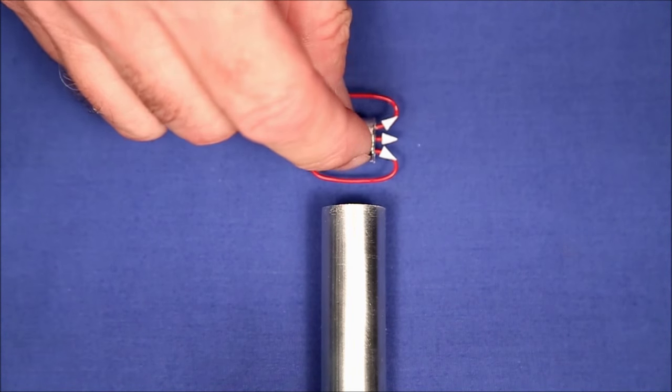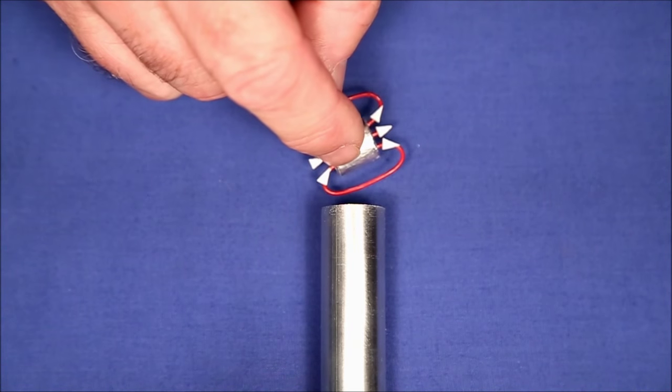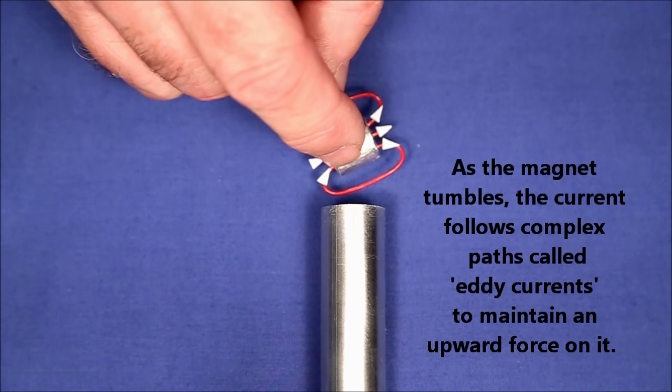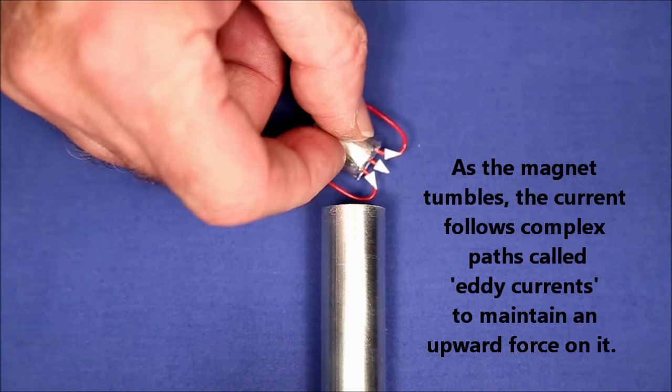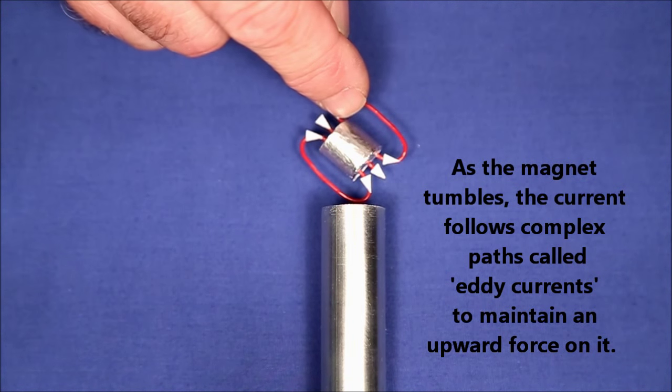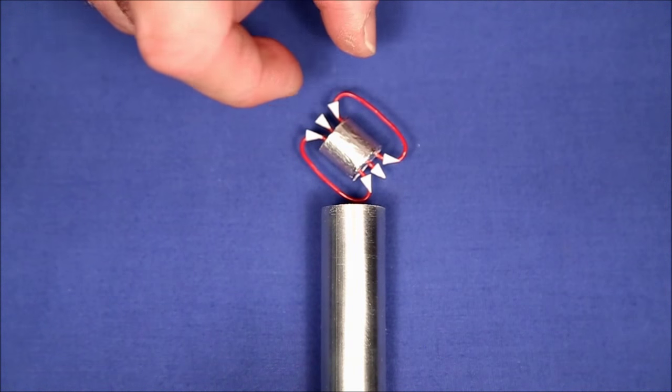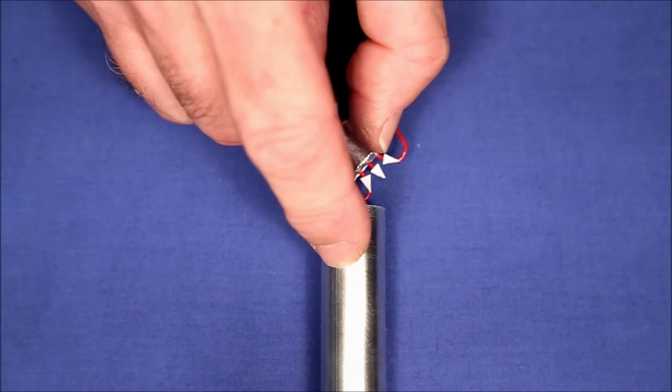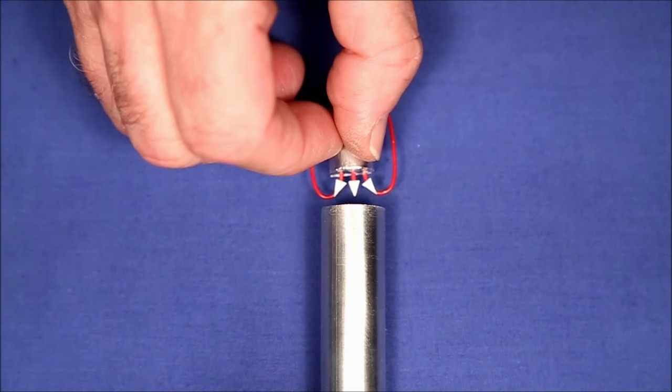So no matter what the orientation is, the leading edge or bottom edge will always project an increasing magnetic field, so it's always going to be pushed against, whereas the trailing edge is always going to be accompanied by a decreasing magnetic field, so it's always going to produce a current in the tube to pull up against it. And that's how it works.